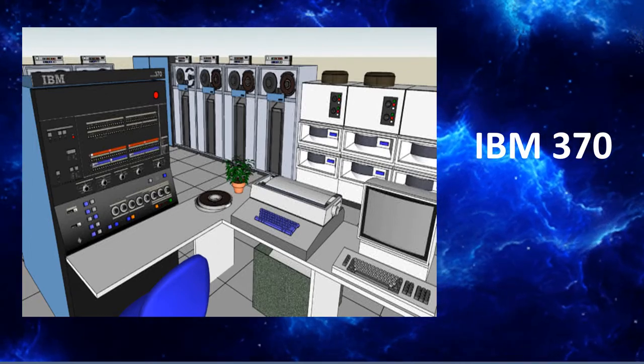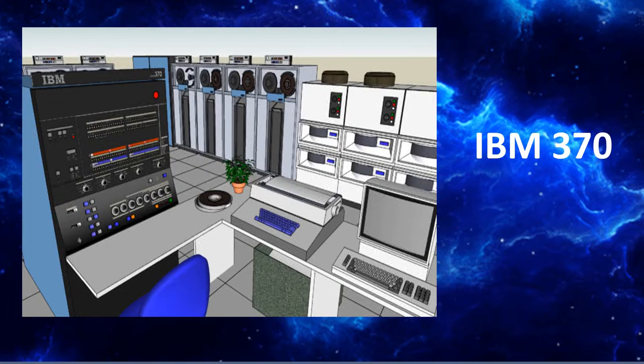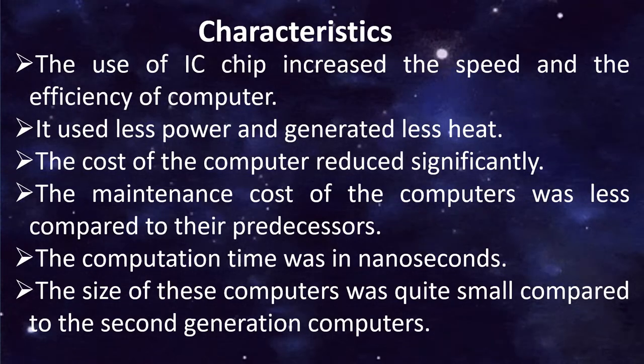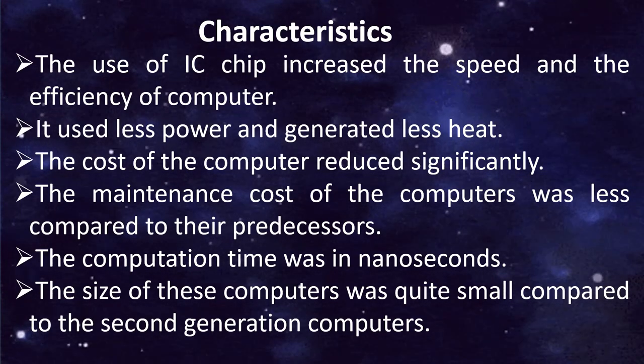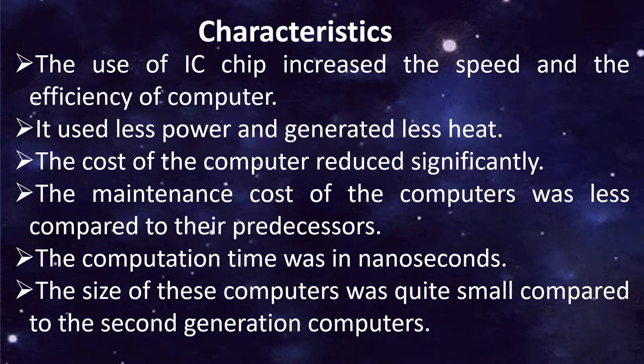Examples of third generation computers are IBM 370 and PDP-11. Some of the characteristics of third generation computers are: The use of IC chip increased the speed and efficiency of computer.